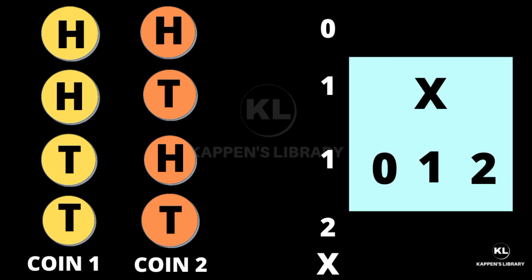When the sample point is HH, no tail appears, so X is equal to 0. When the sample point is HT or TH, one tail appears, so X is equal to 1.